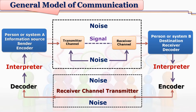We require a transmitter and receiver channel to pass on the signal, and the noise element gets added in this entire process of communication. In the mass communication model, the message only passes from one end to the other and there is no feedback system. With the introduction of new technology, two-way communication is now possible, and we are no longer talking only about one-way traffic in mass communication.